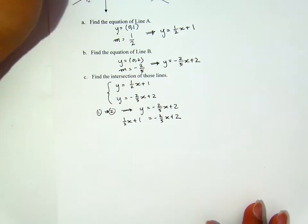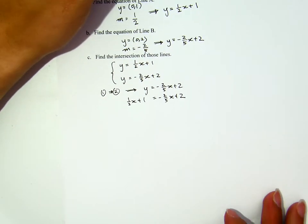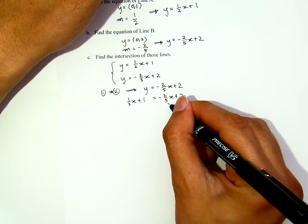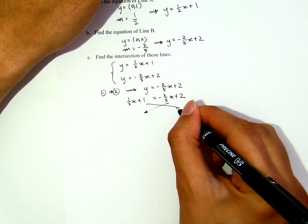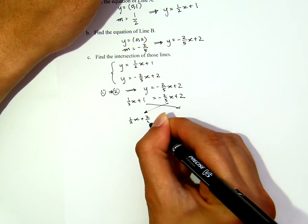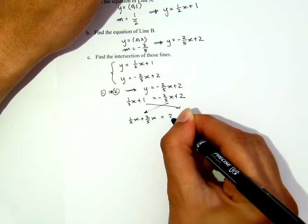Now, the next thing I will do is to solve this. Let me do a conventional method. So, I will move these here and move these there. One-half x plus two-fifths x equals to 2 minus 1.